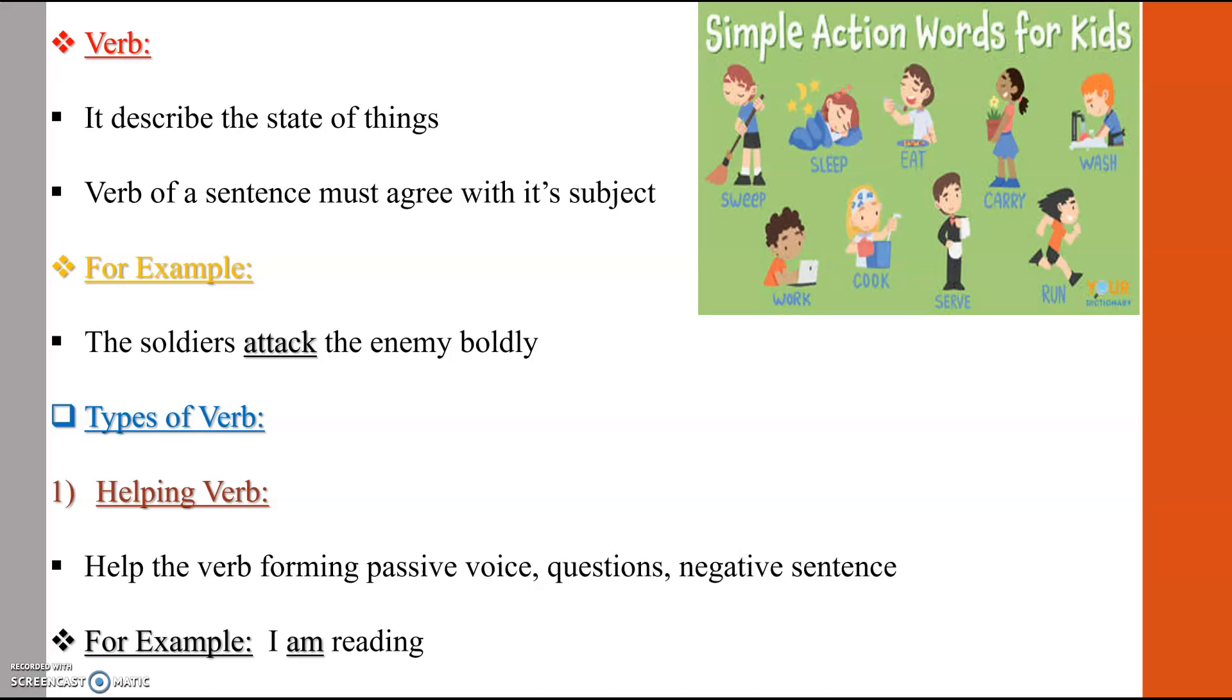Verb can be identified in two ways. It shows action: he plays hockey. In this sentence, plays is basically an action and it agrees with the subject. The second thing to identify a verb in a sentence is that it has three forms: plays, played, or played, or go, went, or gone. These are the two things that help us to identify verb in a sentence.